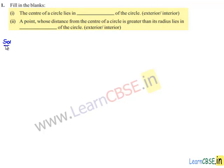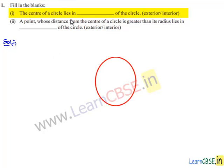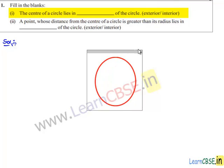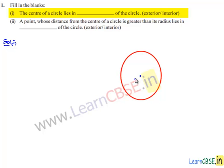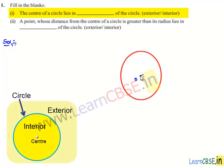Moving on to the solution for the first bit. We know that a circle is a collection of all points in a plane which are at a fixed distance from a fixed point in a plane. Considering the figure of the circle shown, the fixed point is known as the center and the fixed distance is known as the radius. Therefore, the center of the circle always lies in the interior of the circle.